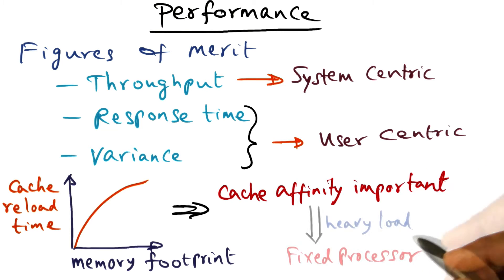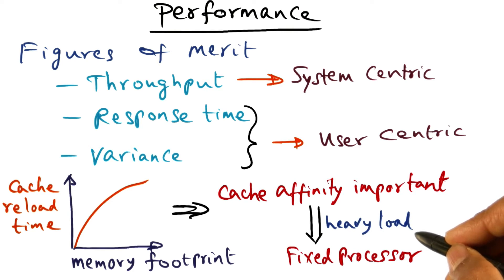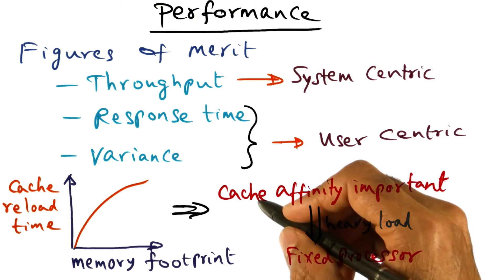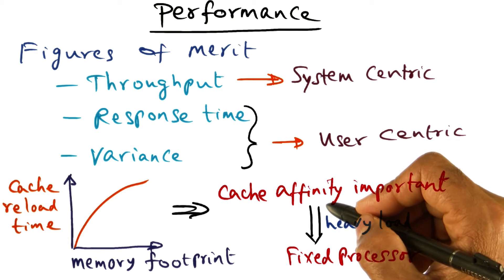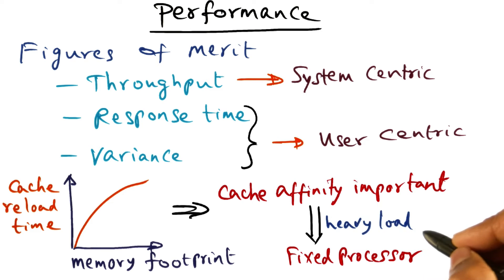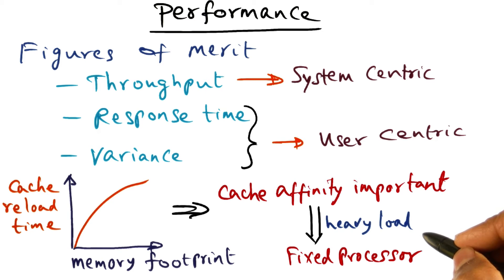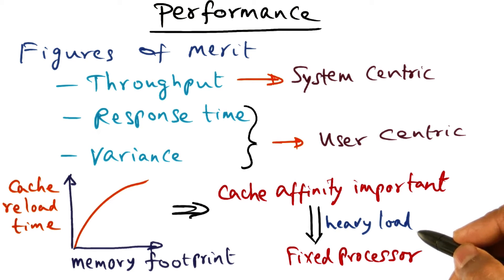On the other hand, if we have a very heavy load in the system, then it is likely that by the time a thread is run on a processor on which it supposedly has an affinity, all of the cache may have been polluted because the load is very heavy. So in between the time that a thread got to run on a particular processor and the next time it runs on the same processor, its cache contents may have been highly polluted by other threads.